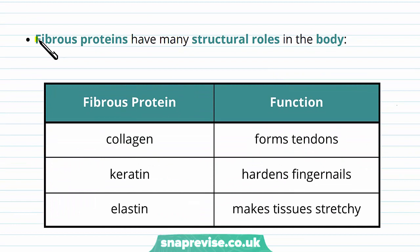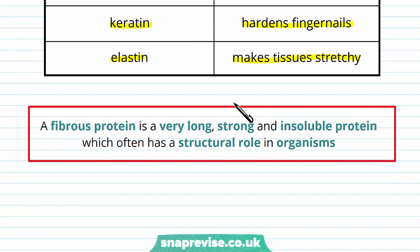Fibrous proteins tend to have more structural roles in the body, as opposed to globular proteins which have more metabolic and functional roles. Examples include collagen, which is important for forming tendons and giving hard structure to bones and artery walls; keratin, which is found in fingernails; and elastin, which is important in making tissue stretchy.